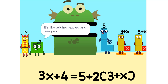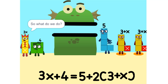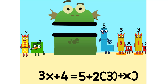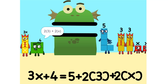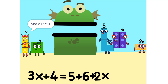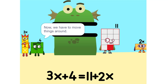Oh, so it's like adding apples and oranges — you can't. So what do we do? Okay, see the two times three plus X? That's the same as two times three plus two times X, which is six plus two X. Oh! And five plus six is eleven. Yeah. Now we have to move things around.